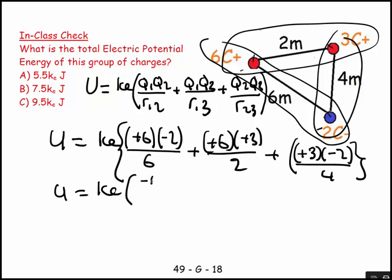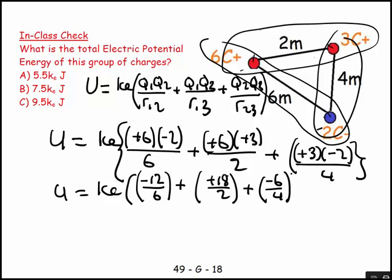So U is equal to ke and then this is going to be minus 12 over six added to this is going to be plus 18 over two added to this would be minus six over four.